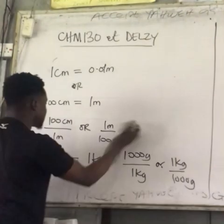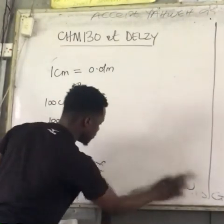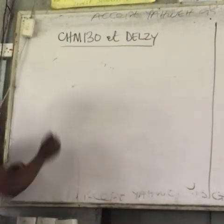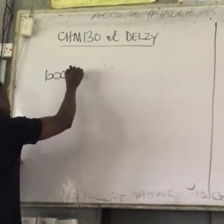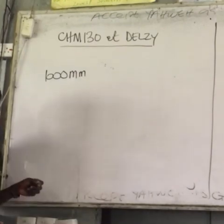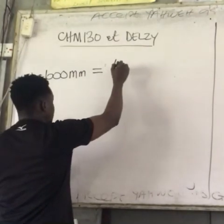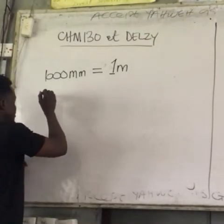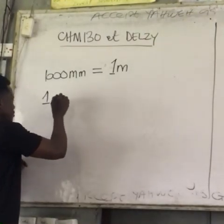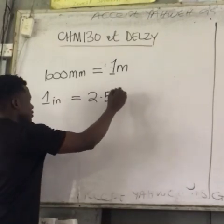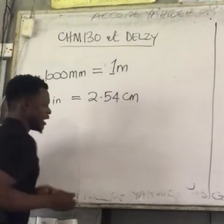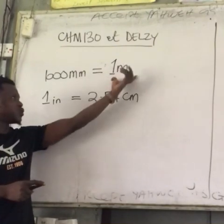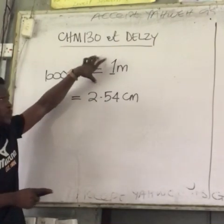Can you express these for me in terms of conversion factors? We know that 1,000 millimeters equals 1 meter, and we also know that 1 inch equals 2.54 cm. Class, please express each of these relationships as two conversion factors.